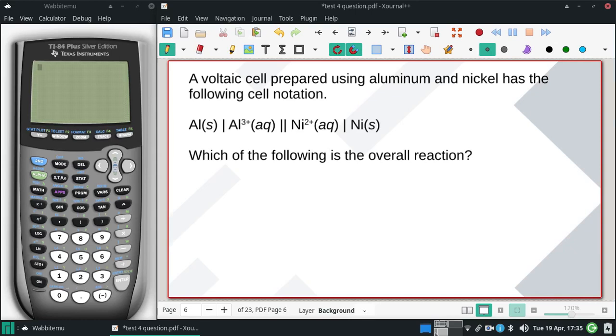Voltaic cells prepared using aluminum and nickel has the following notation. What's the overall reaction?